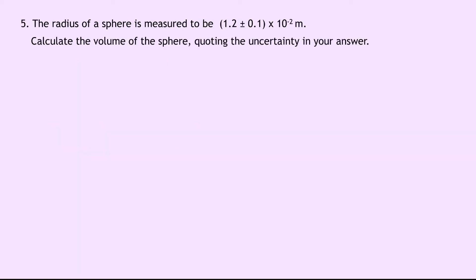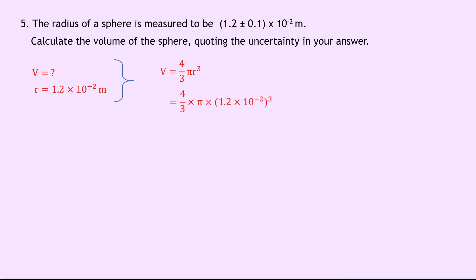Question 5 says the radius of a sphere is measured to be 1.2 plus or minus 0.1 times 10 to the minus 2 metres. Calculate the volume of the sphere quoting the uncertainty in your answer. The volume of a sphere is given by v equals 4 over 3 pi r cubed. Substituting r equals 1.2 times 10 to the minus 2 metres gives 4 over 3 times pi times 1.2 times 10 to the minus 2 cubed, which gives an answer of 7.2 times 10 to the minus 6 metres cubed.